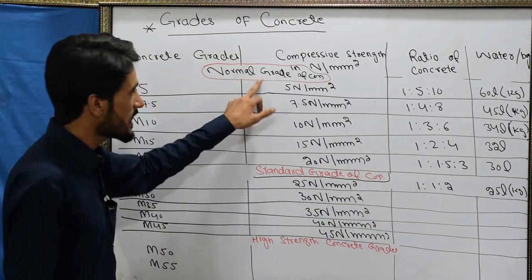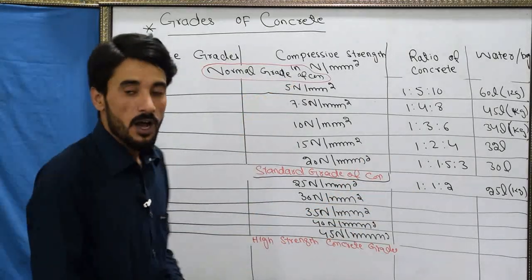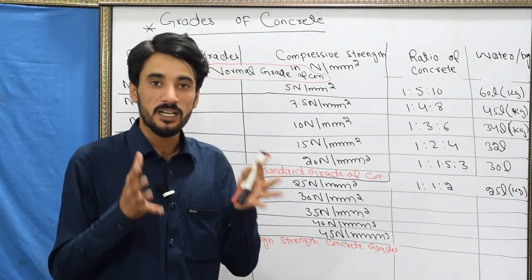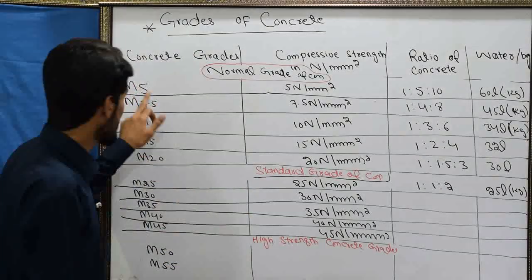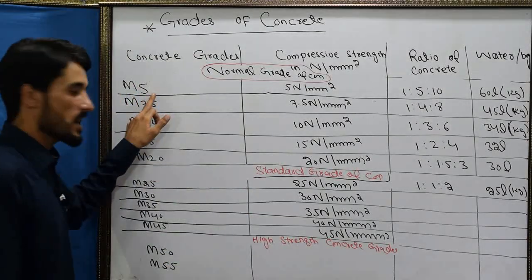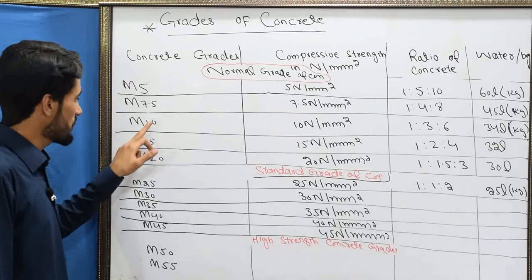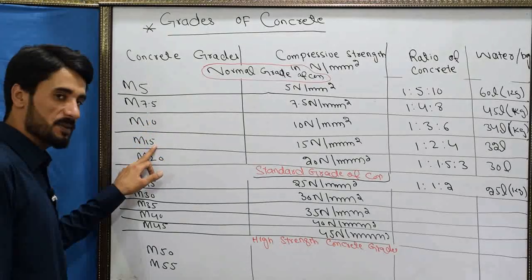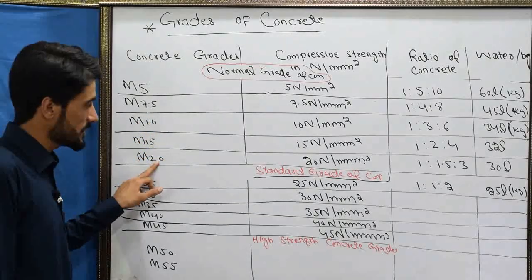Normal grade of concrete is subdivided into five groups: M5, M7.5, M10, M15, and M20.